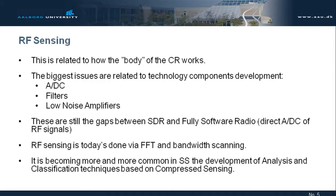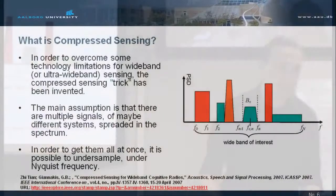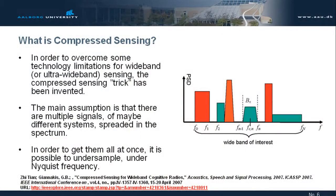Regarding RF sensing, a technique called compressed sensing is becoming extremely popular. If you want to cover the widest band possible, compressed sensing could help. To overcome the limitation of wide-band sampling, we take a very wide band, assume it is sparsely occupied, and then under-sample — below the Nyquist frequency.